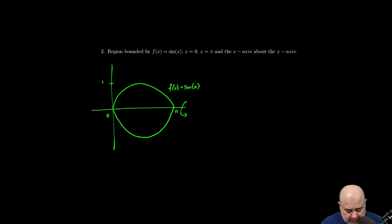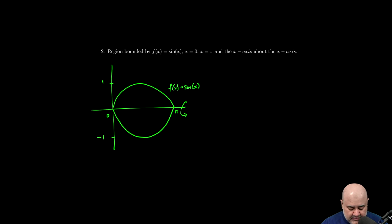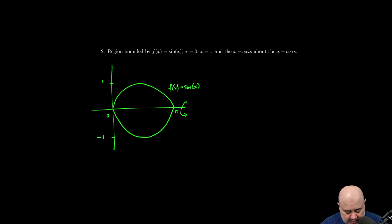So if I reflect that function about the x-axis, I'm going to get sine x flipped upside down, or negative sine x. Then I pick three trace points. Now here, the left endpoint is already on my axis of rotation.